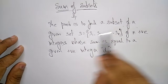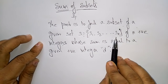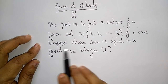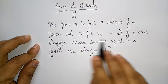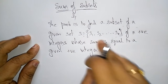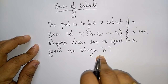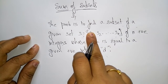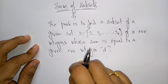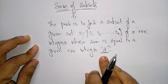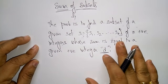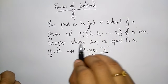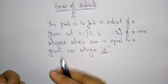So for the given set s1 up to sn, we have to find different subsets of n positive integers whose sum is equal to the given positive integer d. Whatever subset we find from this set, the sum of its elements should equal the given integer d. That is the condition for Sum of Subsets.